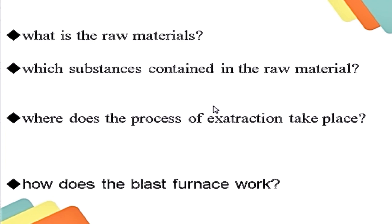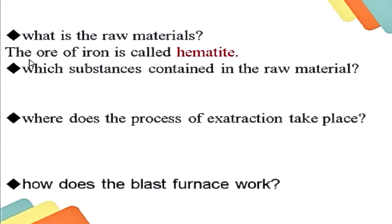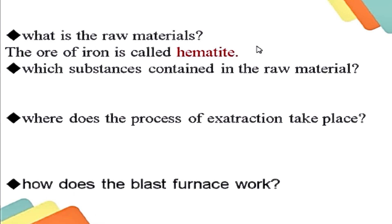These are the raw materials for the extraction of iron. The ore of iron is called hematite, which is Fe2O3. Ore is a substance from which metals can be extracted profitably and conveniently. Hematite, Fe2O3, is the main ore of iron, so we get iron from hematite.